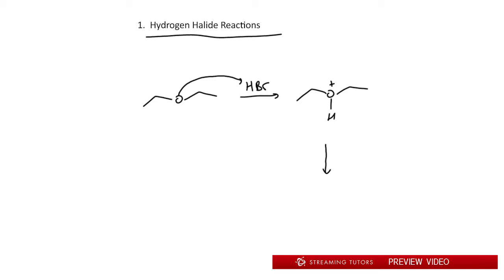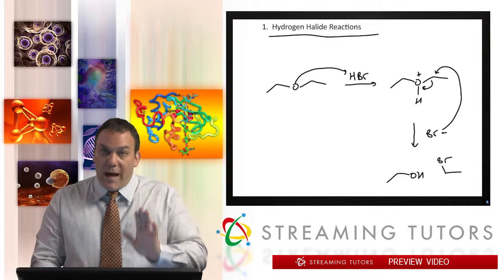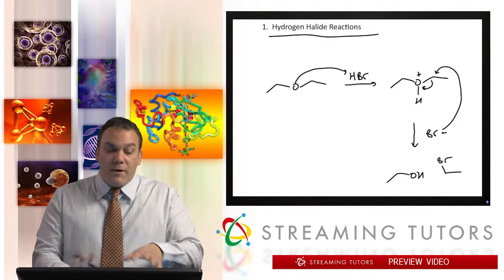We have to decide what's going to happen next. The Br is either going to come in and push out the oxygen, or the oxygen is going to leave on its own and then Br comes in. In this case, I chose to push out the oxygen — you'll see why — and that's because it's primary.